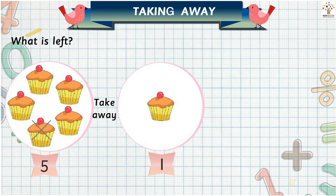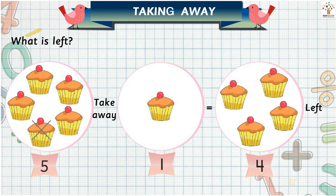There are five cakes, then we take away one cake. Now how many cakes are left? Five minus one is equal to four, so there are four cakes left.